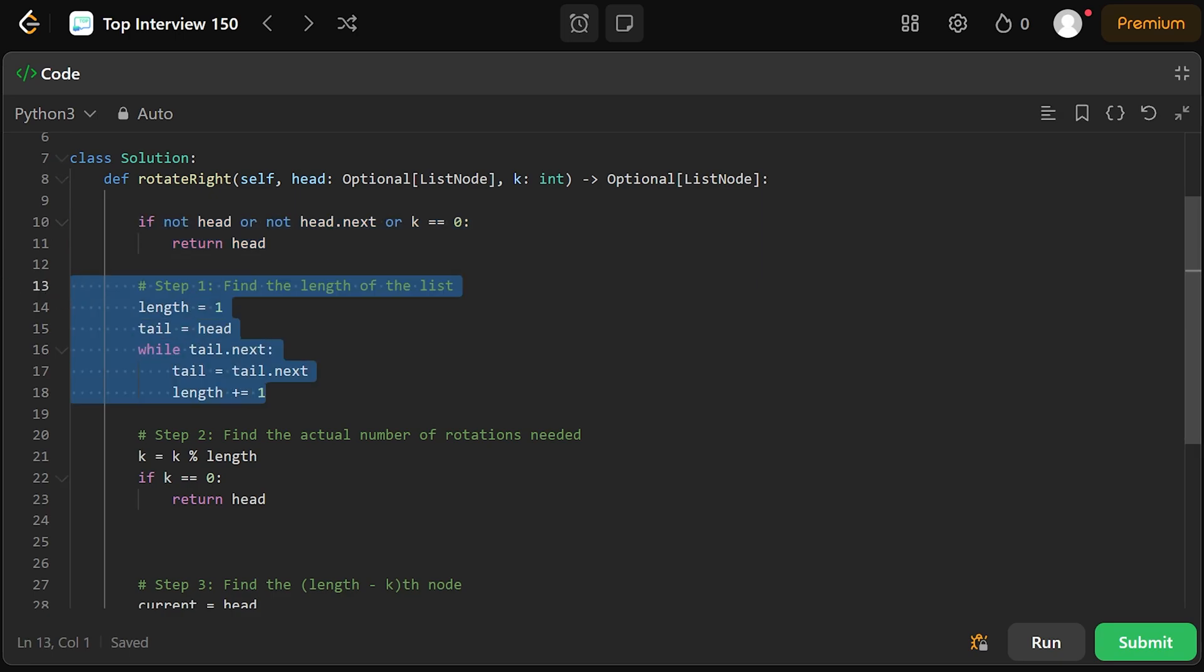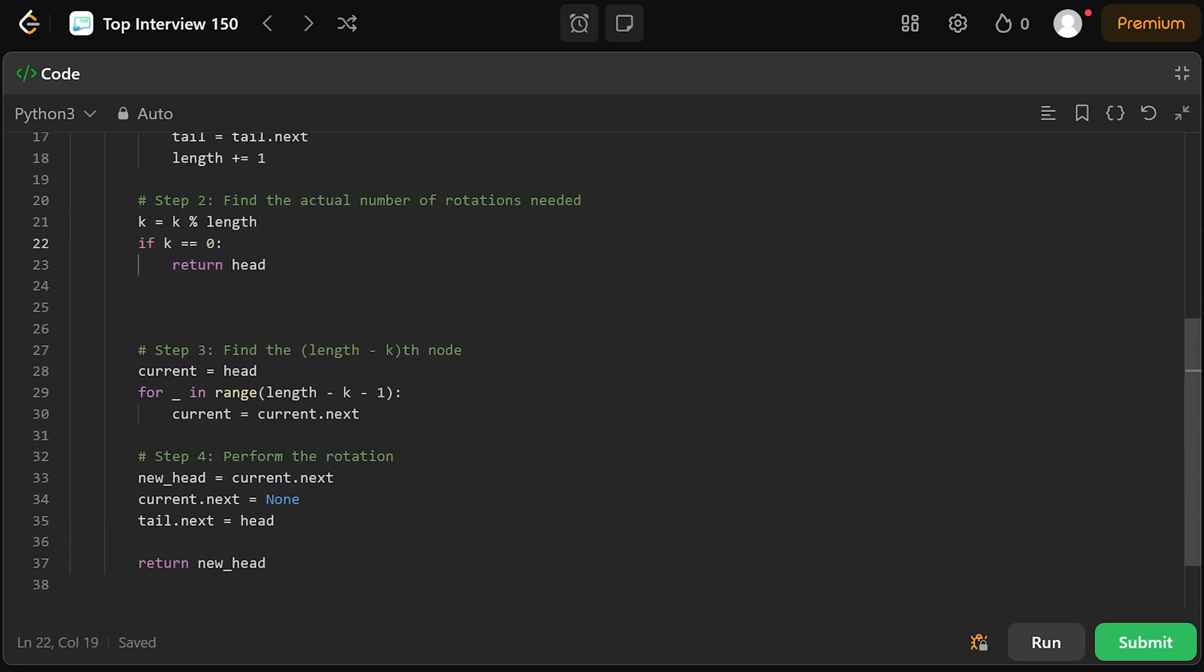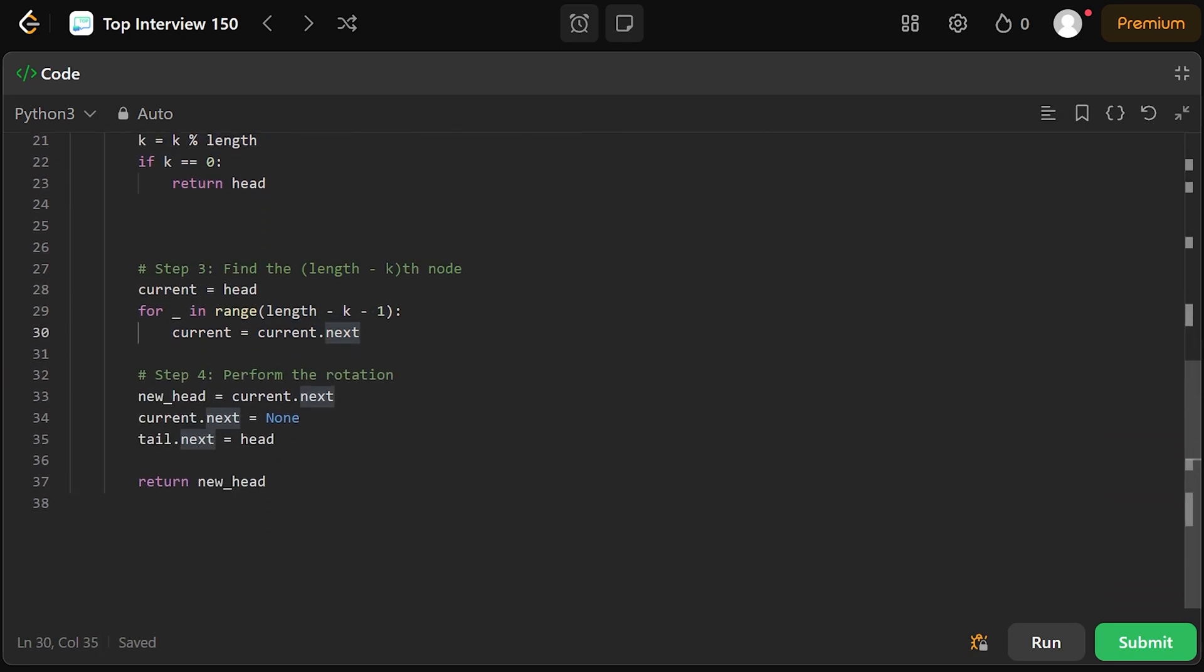Otherwise we proceed to find the length of the list and calculate the value of k. Then we locate the node just before the rotation point, followed by performing the rotation itself. At the end, we return the new head of the list.